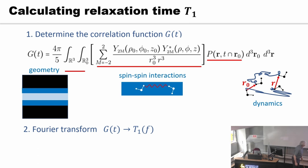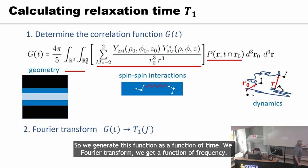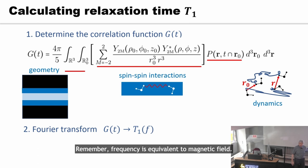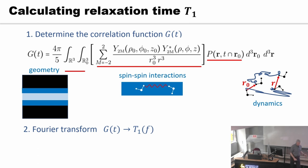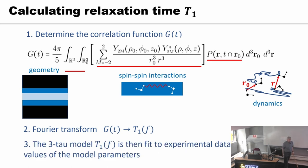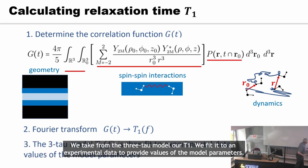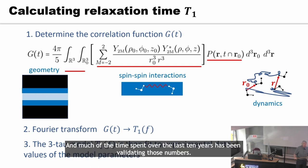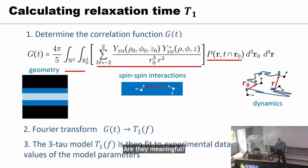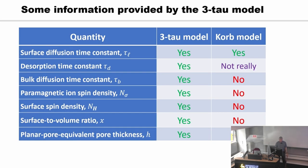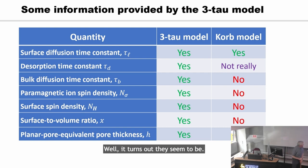We then do a Fourier transform — just like in MRI. We generate this function as a function of time, Fourier transform to get a function of frequency, remembering that frequency is equivalent to magnetic field. Then we take from the 3-tau model our T1, fit it to the experimental data to provide values of the model parameters. Much of the time spent over the last ten years has been validating those numbers — are they meaningful? It turns out they seem to be.